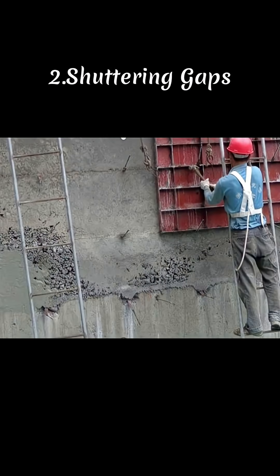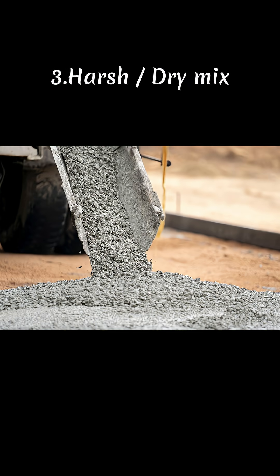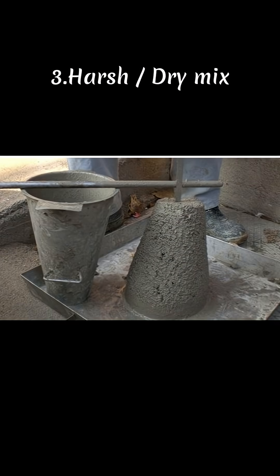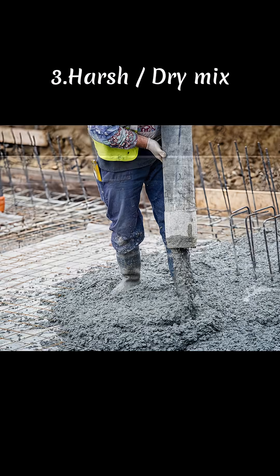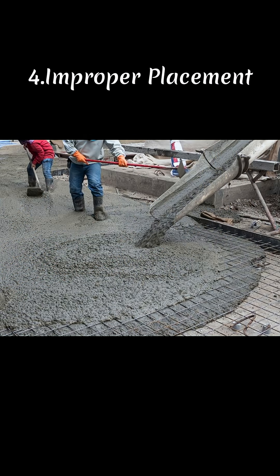When shuttering gaps are open, slurry leaks out. Seal all joints, oil the formwork, and tighten everything properly. A harsh or dry mix won't flow properly and it leaves voids — maintain proper slump, add plasticizer if needed, and control the water-cement ratio.